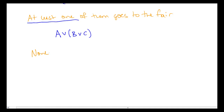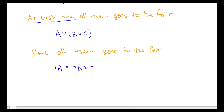How about none of them goes? Well, in that case we can do one of the following two things. We could say Ann does not go and Bob does not go and Carol does not go — negating each conjunct. That is equivalent, generalizing on De Morgan's Laws, to the following.